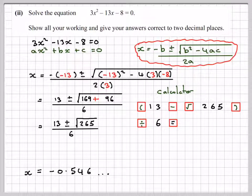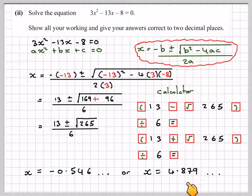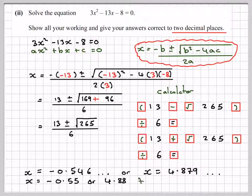And you're going to get x = -0.546 and a few other numbers. Now on your calculator, if you press the replay button, all you need to do is go back and change that sign to a plus. So brackets, 13 + √265, close the bracket, divided 6 equals. And again, that will give you x = 4.879. Now we are to give the answers correct to two decimal places. So this will become -0.55, and this will become 4.88. So x = -0.55 or 4.88 to two decimal places.